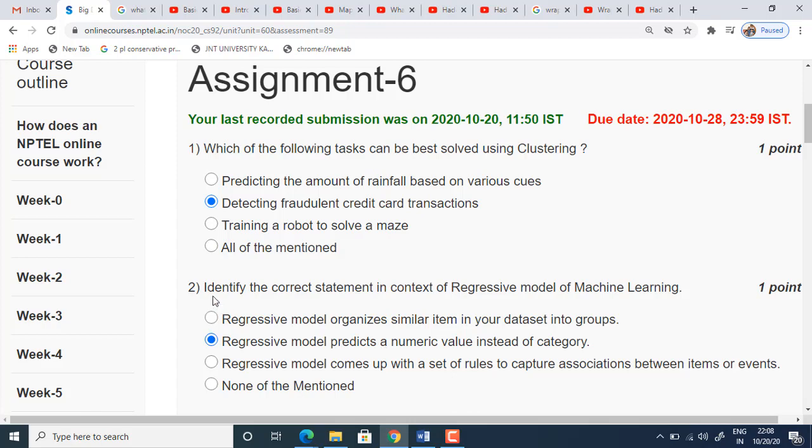Coming to the second question, identify the correct statement in context of regressive model of machine learning. Regressive model organizes similar items in your dataset into groups. Actually, grouping the similar items into one is called clustering but not regressive model. So the first option is wrong. The second one, regressive model predicts a numerical value instead of category. That is true. Regressive always predicts a numerical value rather than the category.